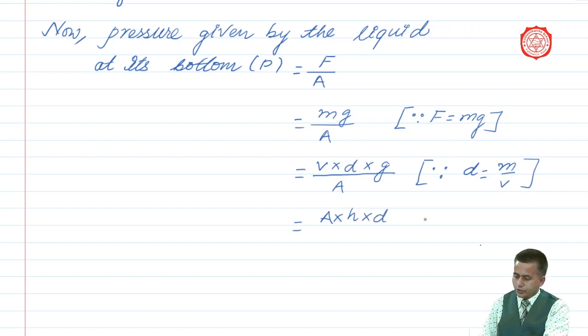And students, here what we need to understand is that volume equals L times B times H, and L times B means area times height. That is why volume means area times height, so we have replaced V with A times H.